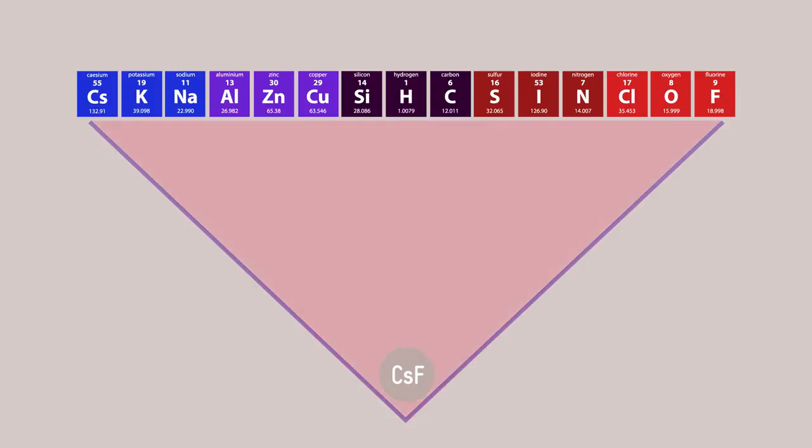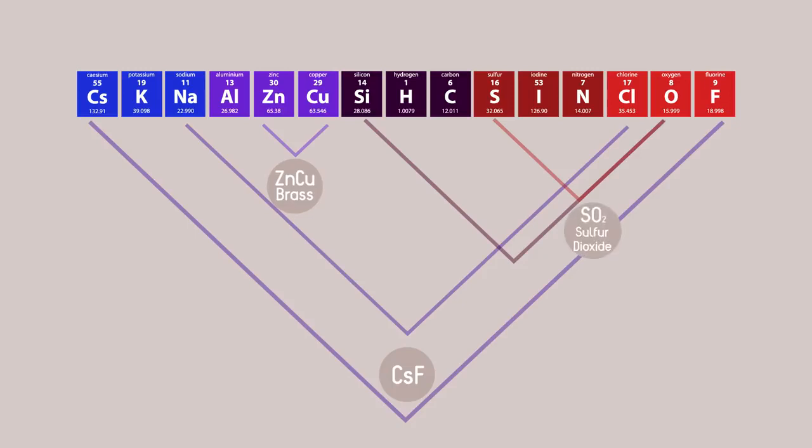We now have a triangular space where all other combinations of elements can be situated. Elements are along the top, and the space will be filled with compounds like brass, sulfur dioxide, sand, and salt.